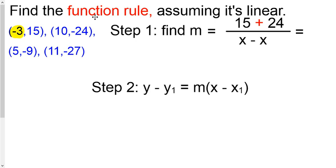Now, because I used this y for the 15 first, I'm going to use the x here. Make that negative 3. And because I used the negative 24 for the second y, this 10 right here is going to become this x. Plug it in. Go calculate my slope. And it's negative 3.